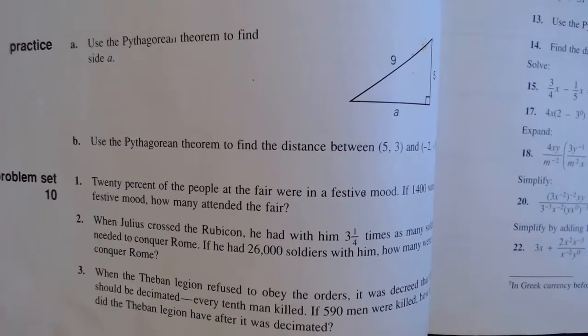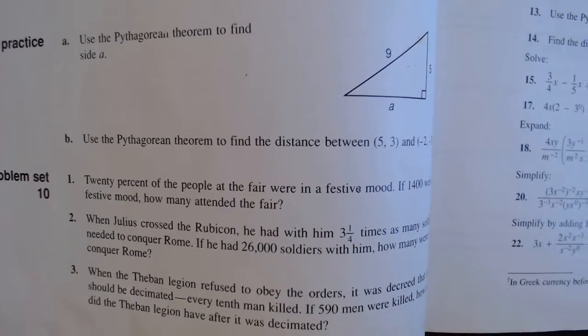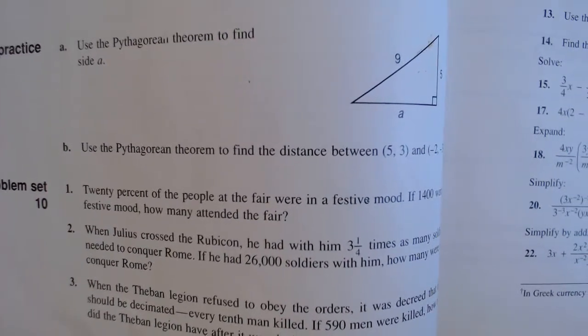Example A and B use Pythagorean theorem to find the distance of one missing side, and then use it to find the distance between two points on a graph.